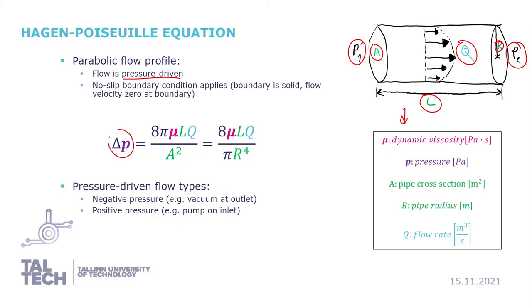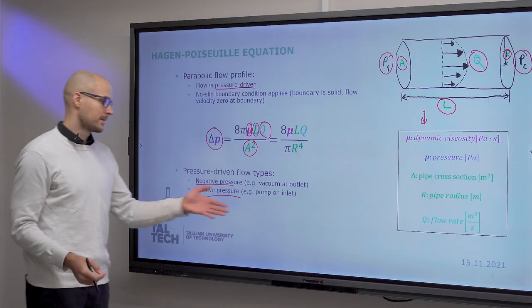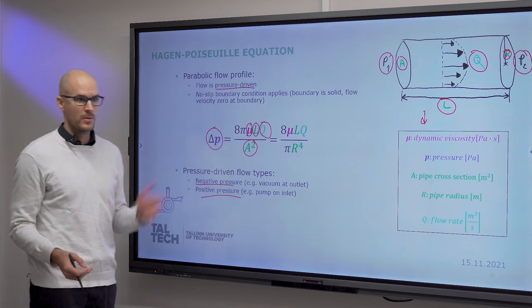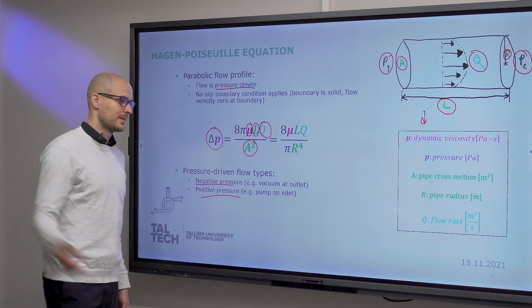The pressure drop or pressure difference between the two ends will be possible to express like this. What I would like to call your attention to is the quantities that characterize the size and shape of your channel, the viscosity of the liquid that goes in, and then the flow rate. Based on which pressure is higher than the other, you can have negative or positive pressure. In one case, you have a vacuum on the outlet. In the other case, you have a pump on the inlet. You either push on the inlet side or pull on the outlet side.